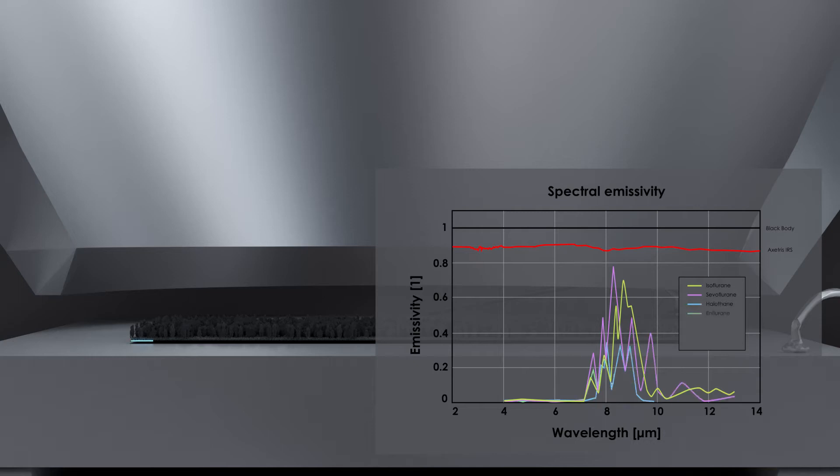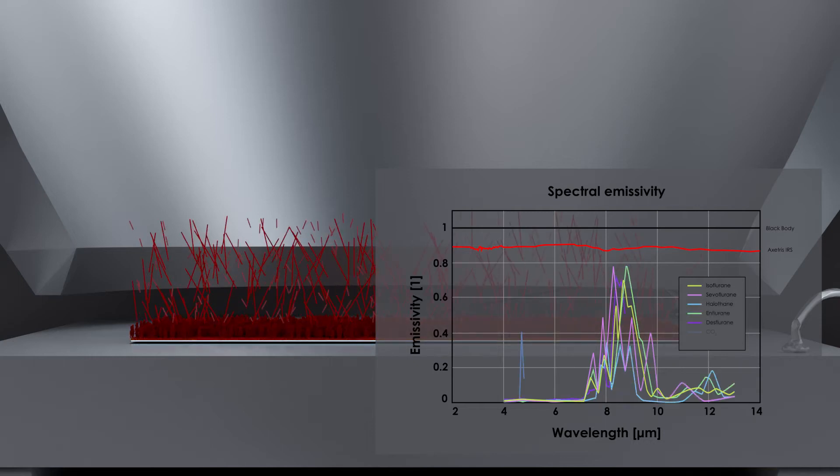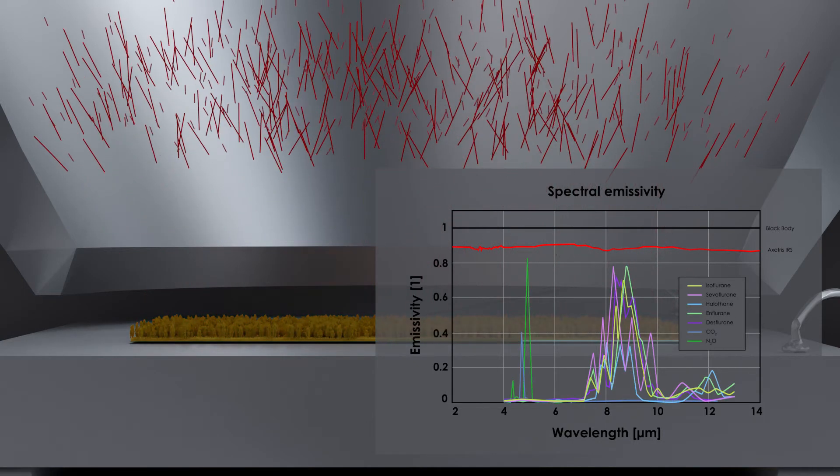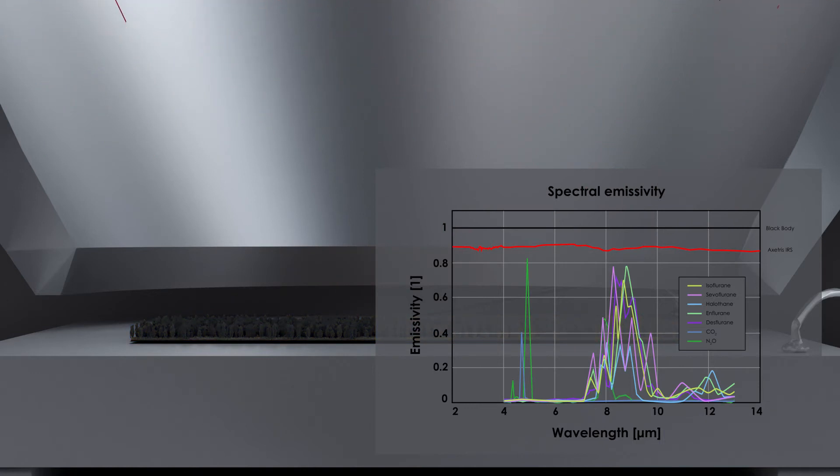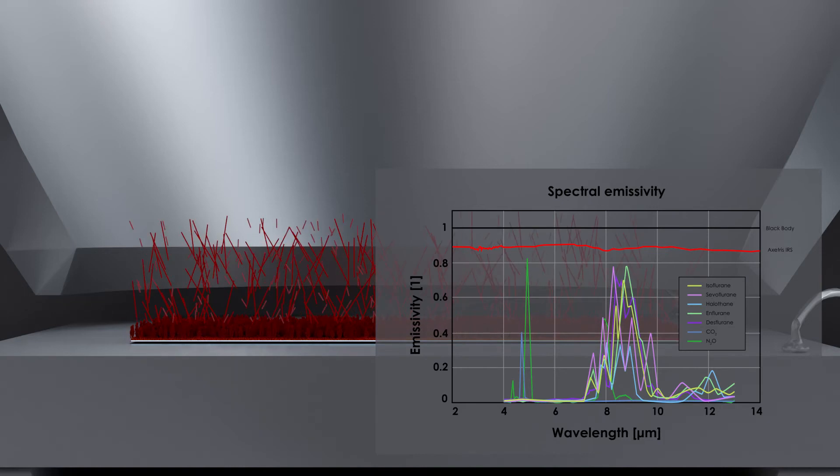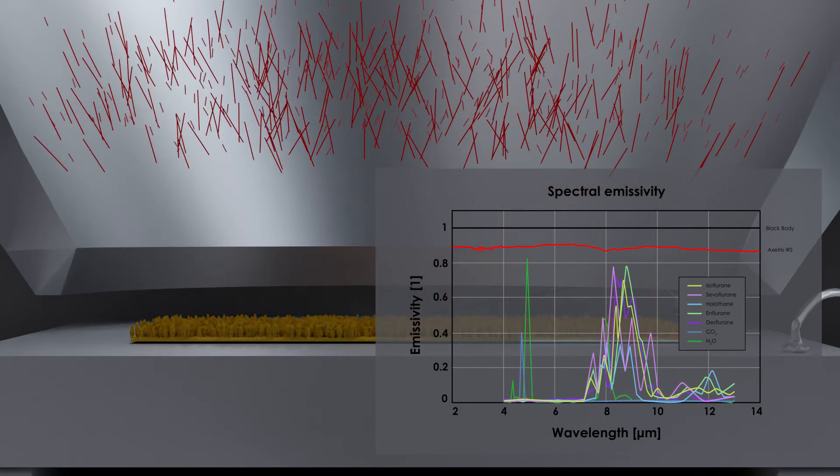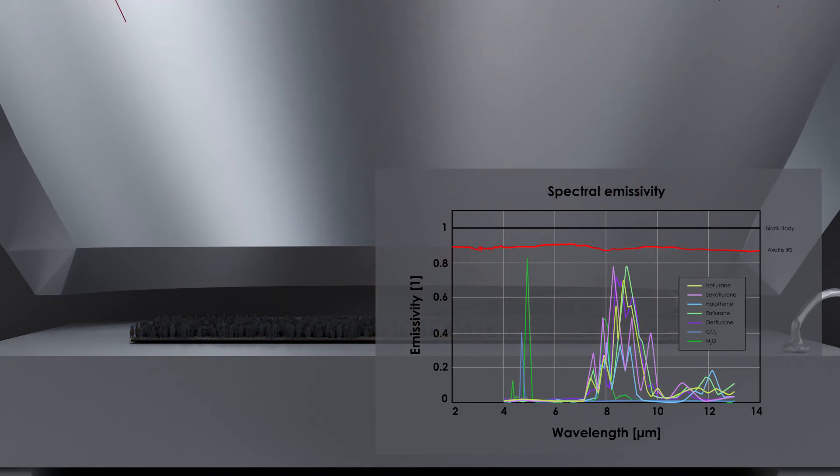Thanks to the unique manufacturing process of this layer, high emissivity is made possible constantly over a very large wavelength range. This makes the Exatris IRS a perfect component for multi-gas measurement as it's needed for monitoring of anesthesia gases.